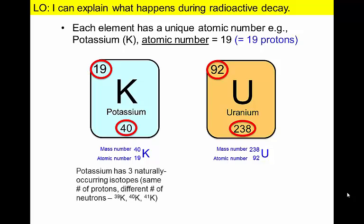Isotopes are different versions of an element with different numbers of neutrons, and hence different mass numbers. For example, both potassium and uranium have three naturally occurring isotopes.